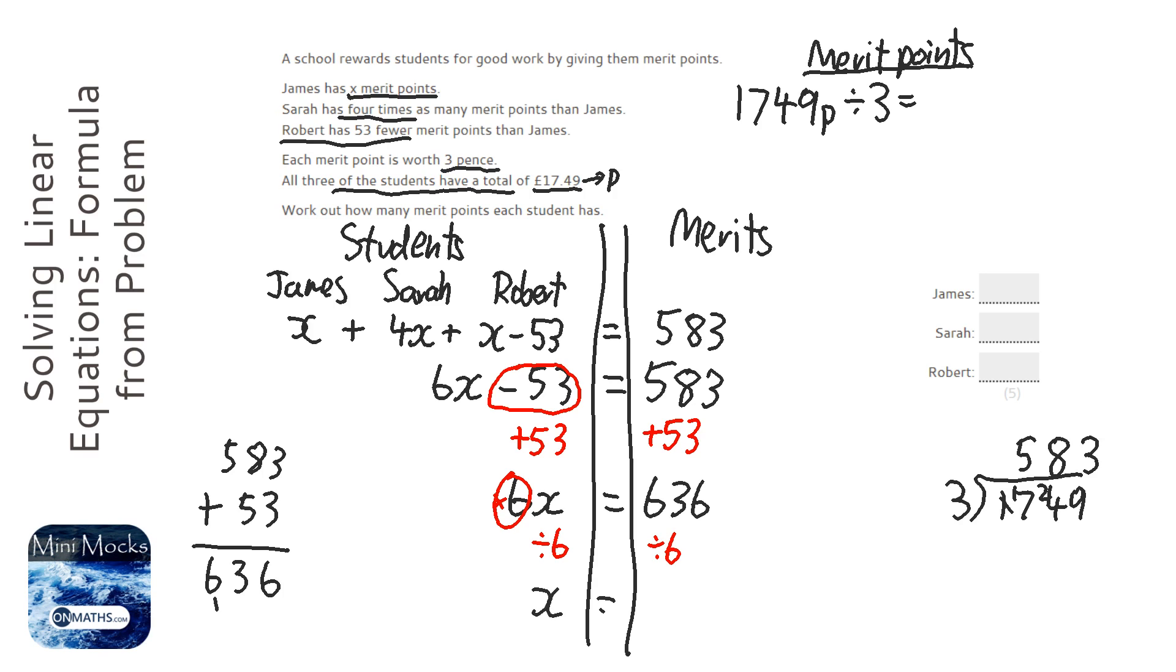So we're left with x on the left hand side. Now this is going to be quite a simple bus stop method, but I'm going to do it anyway. So 636. So 6 into 6 go 1, 6 into 3 don't go, 6 into 36 go 6. So it's 106. So x is worth 106.